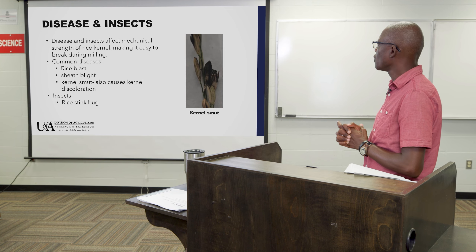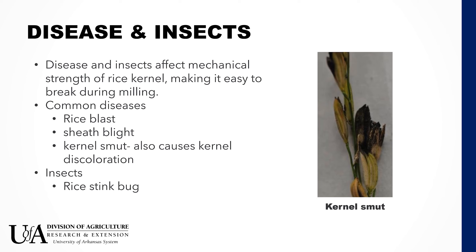Another factor affecting head rice yield and milled rice yield is disease or insect infestations on the kernels. Disease or insects affect the mechanical strength of the rice kernel, making it easy to break during the milling process. Common diseases include rice blast, sheath blight, and kernel smut — also known to cause discoloration of rice and to significantly soften the kernel, making it easy to break during milling.